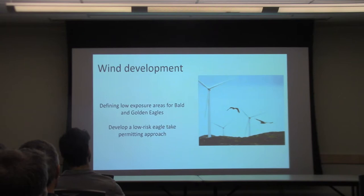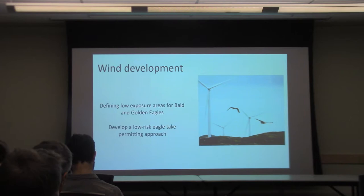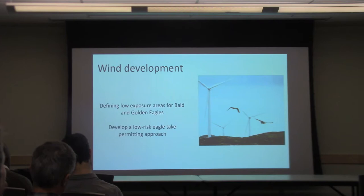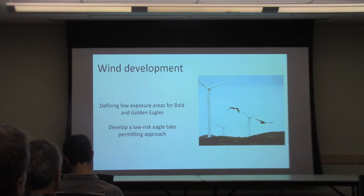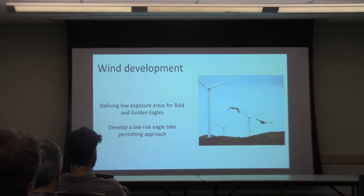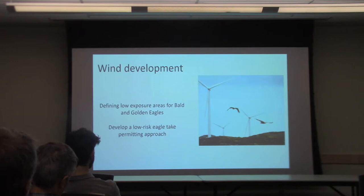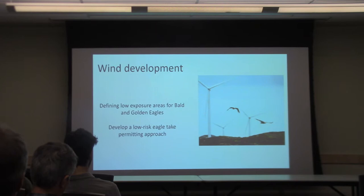I'm going to move to another example that uses some of these new eBird data products. This is a project with the U.S. Fish and Wildlife Service. Briefly, they want to define low-risk areas for eagle take permitting — the idea is to streamline the permitting process for wind farms so that projects in low-risk areas could be permitted without going through a rigorous two-year environmental impact assessment regarding eagles. The problem was that their abundance data was very coarse and they needed a much finer-scale analysis.